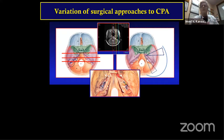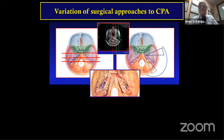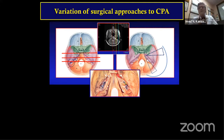The frontorbital zygomatic approach can give access to the posterior cavernous sinus and even reach Meckel's cave. But the Kawase approach, which is the anterior petrosal, and the retrosigmoid posterior approach are the workhorses — like the pterional approach for the frontolateral area.